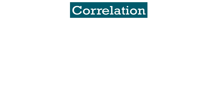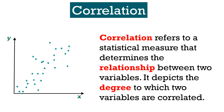Correlation. Suppose you are studying two quantitative variables at the same time and you get to know that the change in one variable is reciprocated by an equivalent change in another variable, directly or indirectly. Then these variables are said to be correlated. If there is no such association found between them, then they are said to be uncorrelated. Correlation refers to a statistical measure that determines the linear relationship between two variables. It shows the degree to which the two variables fluctuate together. The scientific study of how variables are correlated to one another is called correlation analysis.